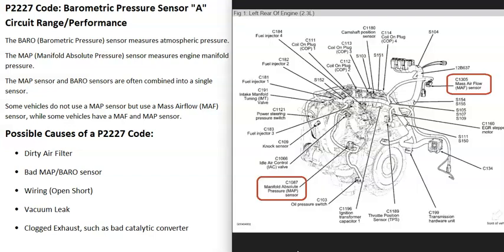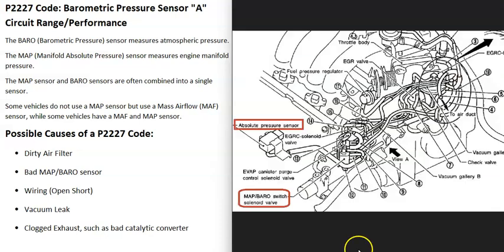One thing to note about these sensors is that they can't always be separate — sometimes two can be built together and another one separate. Some vehicles won't even have one of these sensors, so it really varies depending on the vehicle, year, and model. Be sure to get a diagram showing where all these sensors are located.